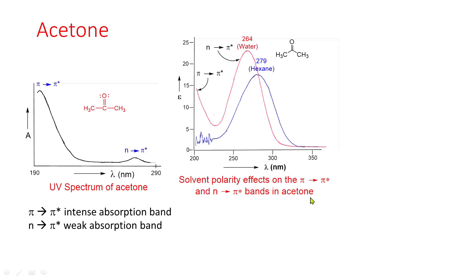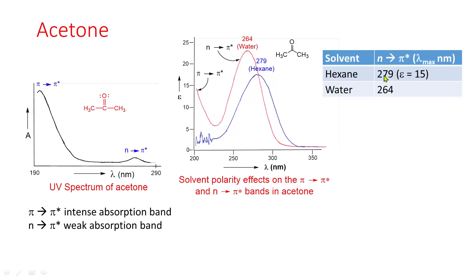This diagram shows solvent polarity effects on the pi-to-pi-star and n-to-pi-star bands in acetone. For the n-to-pi-star band, this curve is in hexane and this is in water. Lambda-max goes to a lower value for the n-to-pi-star transition.